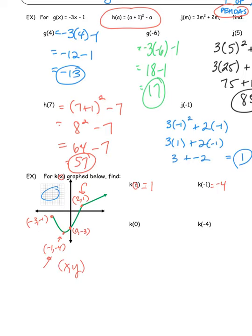k(0): when x is 0, y is negative three — so k(0) = -3. For k(-4): there is no x value at negative four on this graph, so the function is undefined at that value. There is no y value at that point.